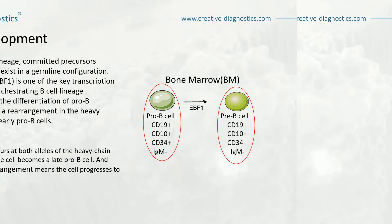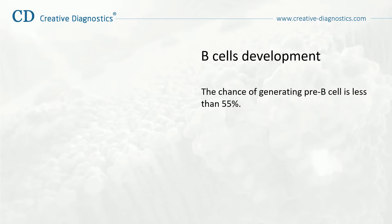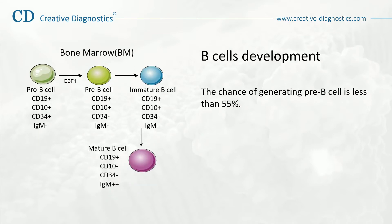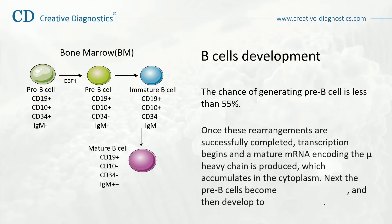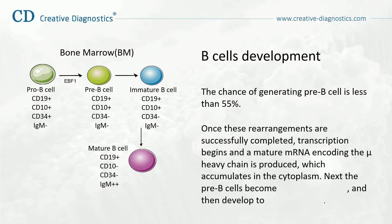A rough estimate of the chance of generating a Pre B-cell is thus something less than 55%. Once these rearrangements are successfully completed, transcription begins and a mature RNA encoding the mu heavy chain is produced, which accumulates in the cytoplasm. Next, the Pre B-cells become immature B-cells, and then develop into mature B-cells.